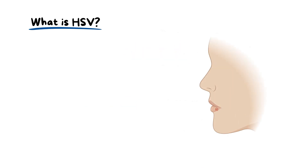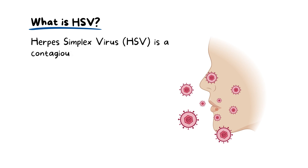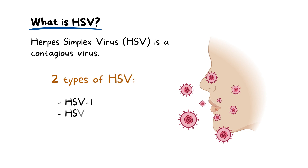Imagine your mouth as a dynamic ecosystem, bustling with activity. Now imagine an uninvited guest making an appearance — that's where HSV enters the scene. Herpes simplex virus, or HSV, is a contagious virus comprising two main types: HSV-1 and HSV-2.